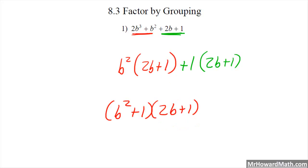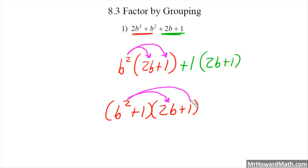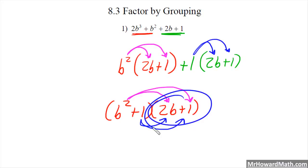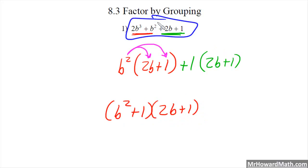Let's talk about why this works. In our original factoring, where we took the greatest common factor out, b² times 2b and b² times 1 — that's what we have here. Over here, the parentheses gave us 1 times 2b and 1 times 1. So we only need to write 2b plus 1 one time. If you wrote another 2b plus 1, it would be wrong. So our factored form is (b² + 1)(2b + 1).